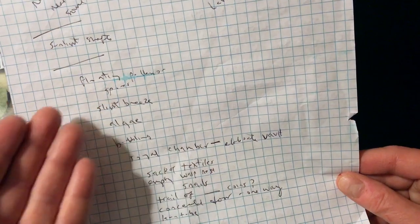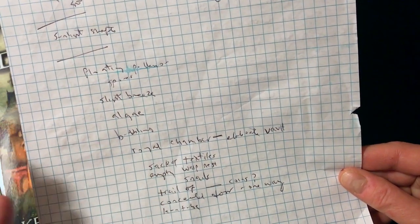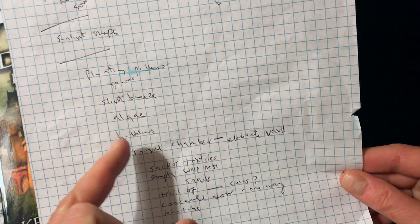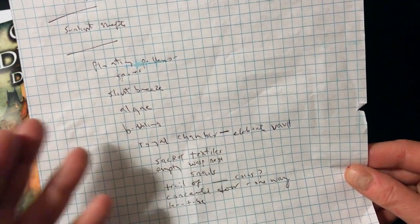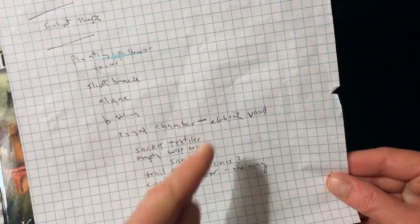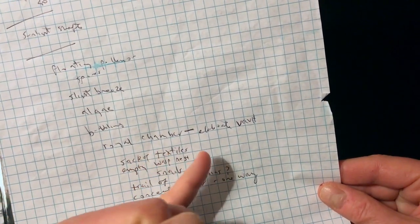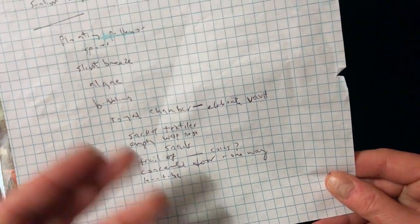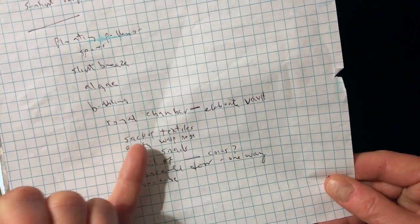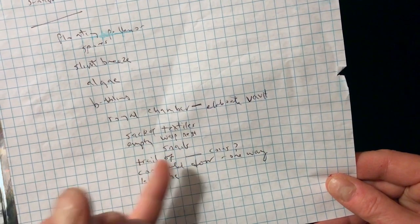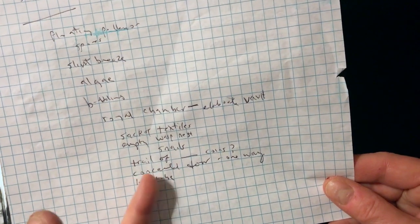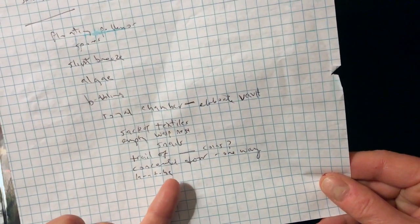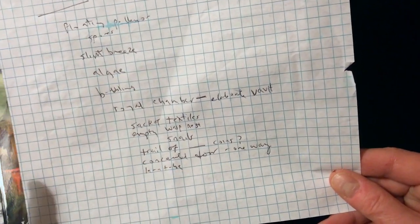We're getting a natural theme in some manner. There's some bubbling that's heard, again tying into this concept of something with water is going to be going on here. Clearly, in terms of the actual room I rolled, I got a royal chamber with an elaborate vault. Then I got a few things that I'm not sure how I would work in or maybe I would just ignore. Inside this chamber there's a sack of textiles, there's an empty wasp nest that doesn't seem to fit into my theme. Snails - well that could suggest a trail. There's a trail of something, there's a one-way concealed door, and then there's a lava tube.